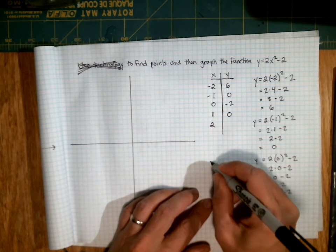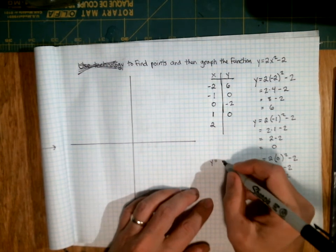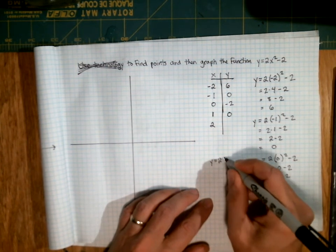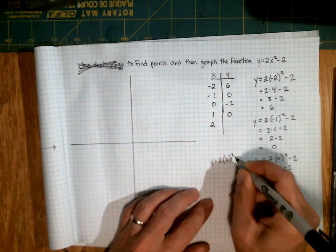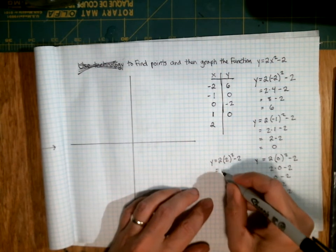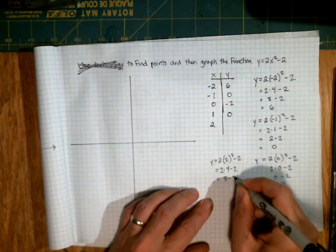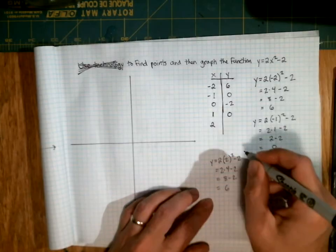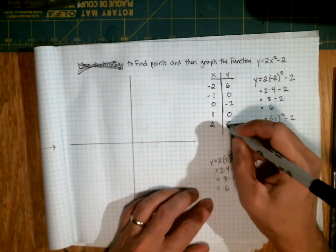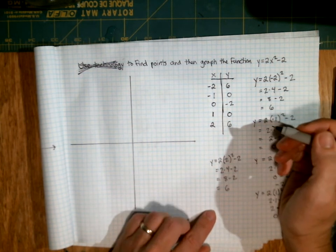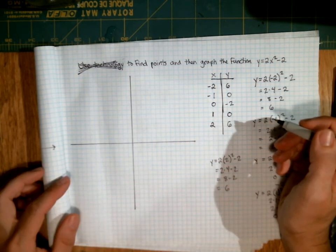And then our last one is when x is 2. So we'll have y equals 2 times 2 squared minus 2. So that's 2 times 4 minus 2, which is 8 minus 2, which is 6. Check it out. It's the same thing we got when x was negative 2. So that might not happen on all of them, but on this one.